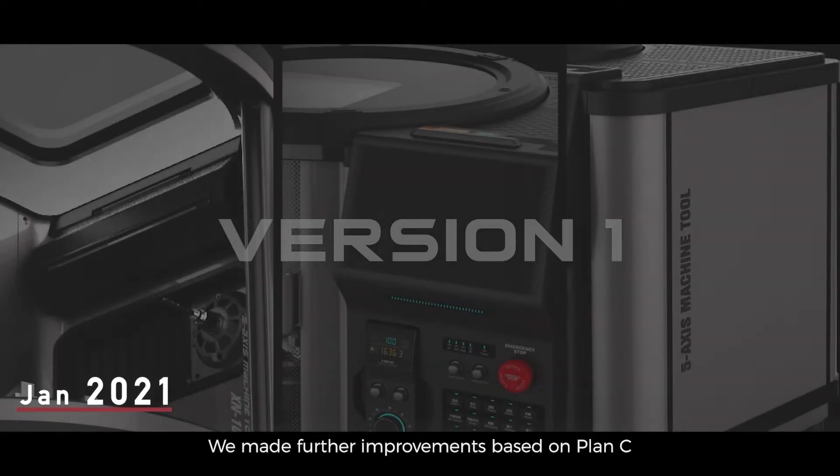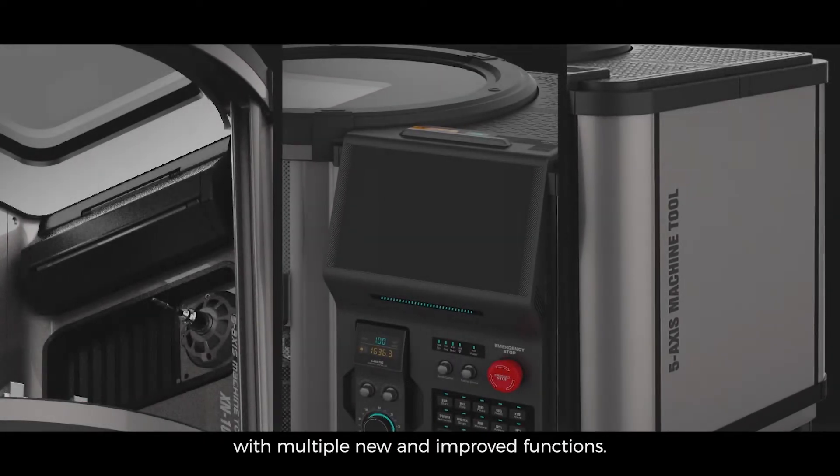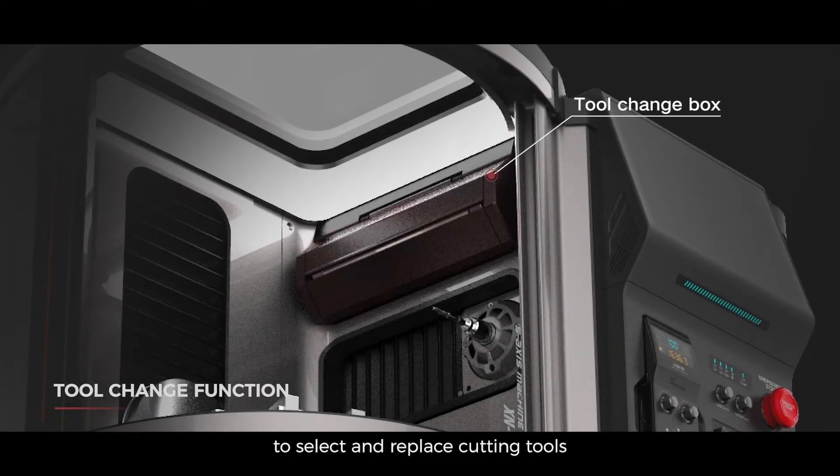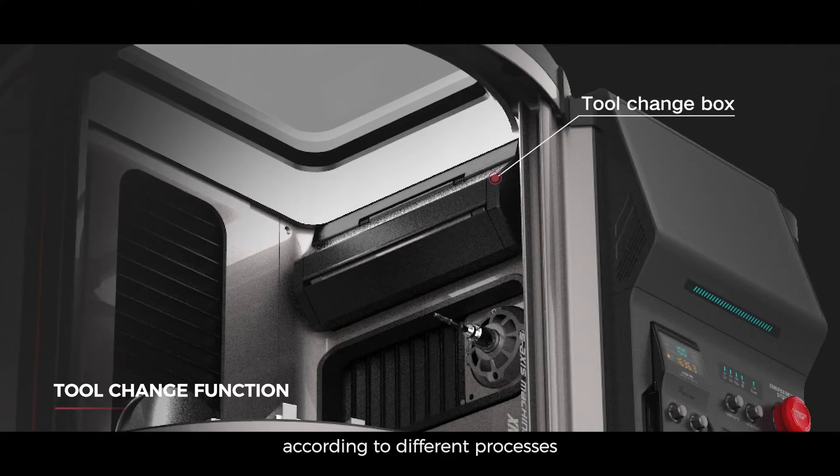We made further improvements based on Plan C and rolled out version 1 with multiple new and improved functions. The newly added Tool Change System to select and replace cutting tools according to different processes, achieving machining of workpieces in different processes.